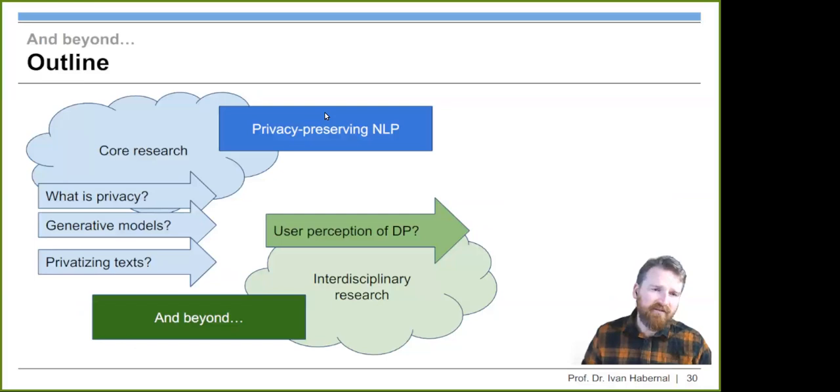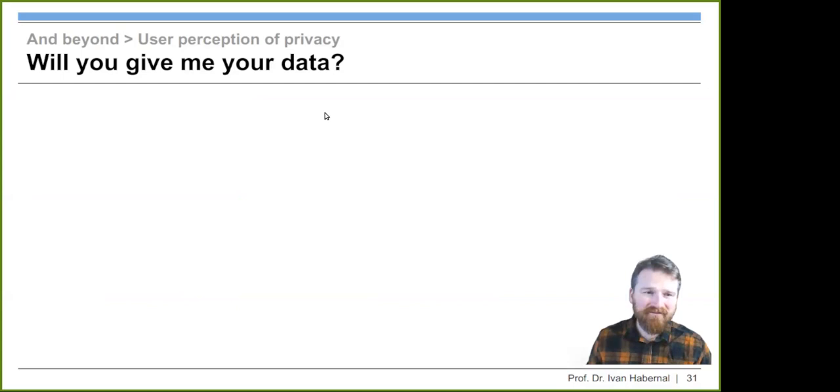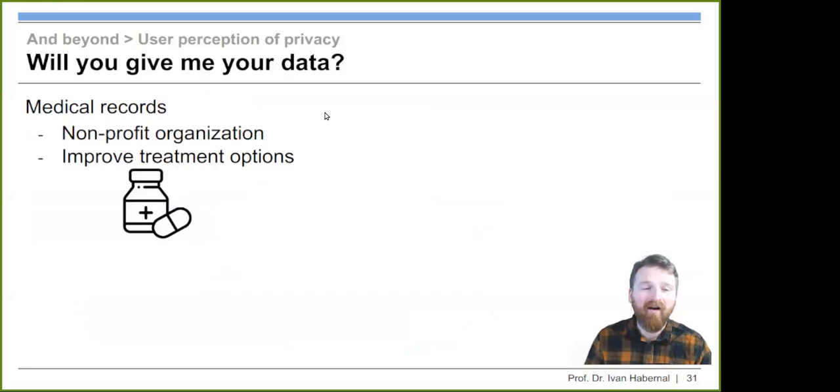This was the first part about privacy preserving things, but let's look at the actual user perception of privacy. We talked about these epsilons from one until hundred or infinity. The question is really, will you give me your data? We set up an experiment with two scenarios. One scenario would be concerning medical records. We said, listen, I want your data, your text data, maybe medical records, and I'm a good guy. I'm going to run a nonprofit organization and I just want to improve treatment options. I'm not a big bad guy collecting it for advertisement or stuff like that. This is one scenario.